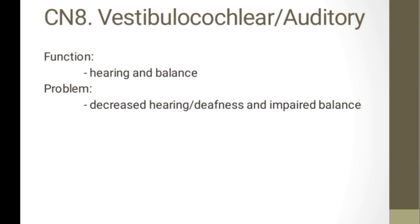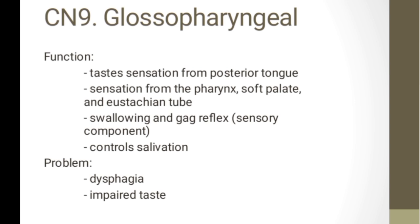Cranial nerve 9 is the glossopharyngeal. Its function is taste sensation from the posterior tongue, sensation from the pharynx, soft palate, and eustachian tube, as well as swallowing and gag reflex — where it serves as the sensory component — and it also controls salivation. The common problem is dysphagia or difficulty swallowing, and impaired taste.